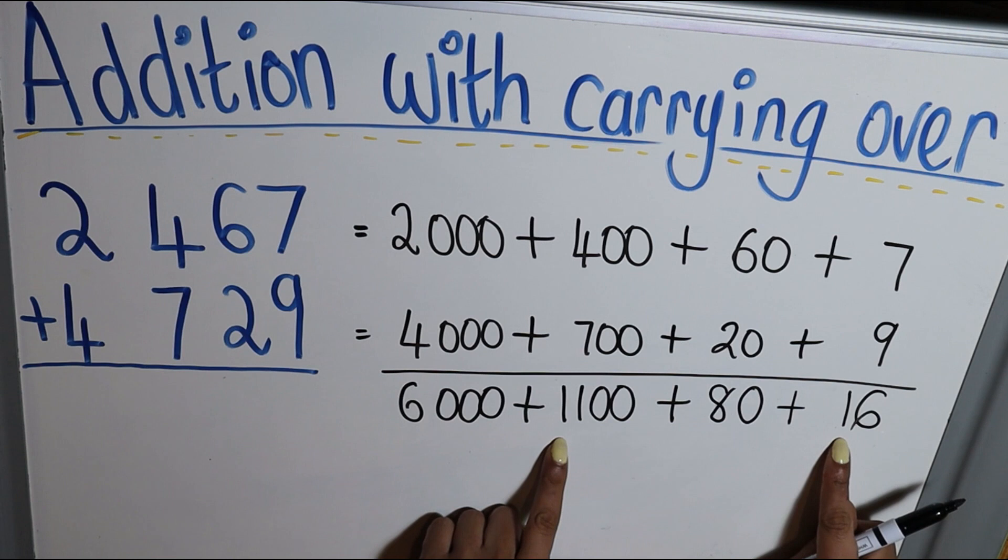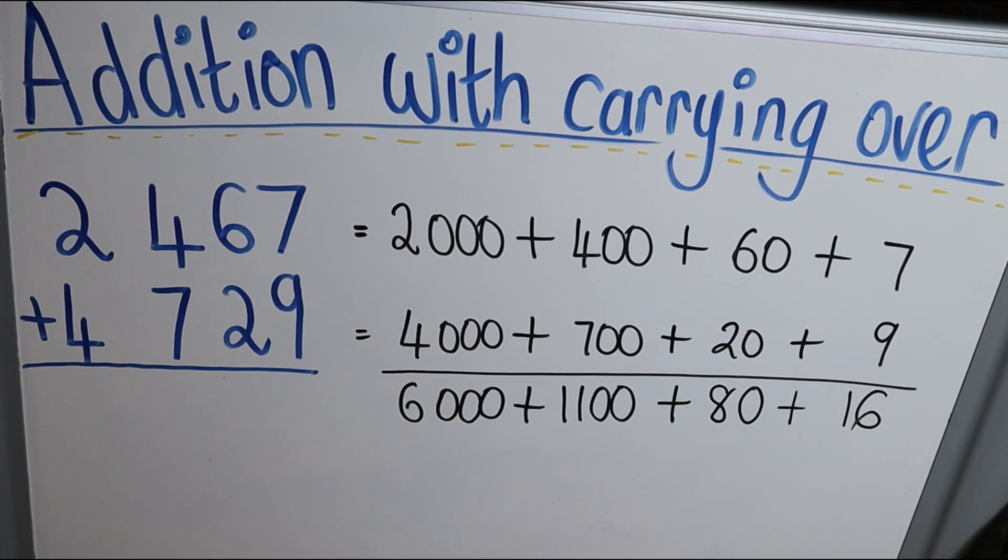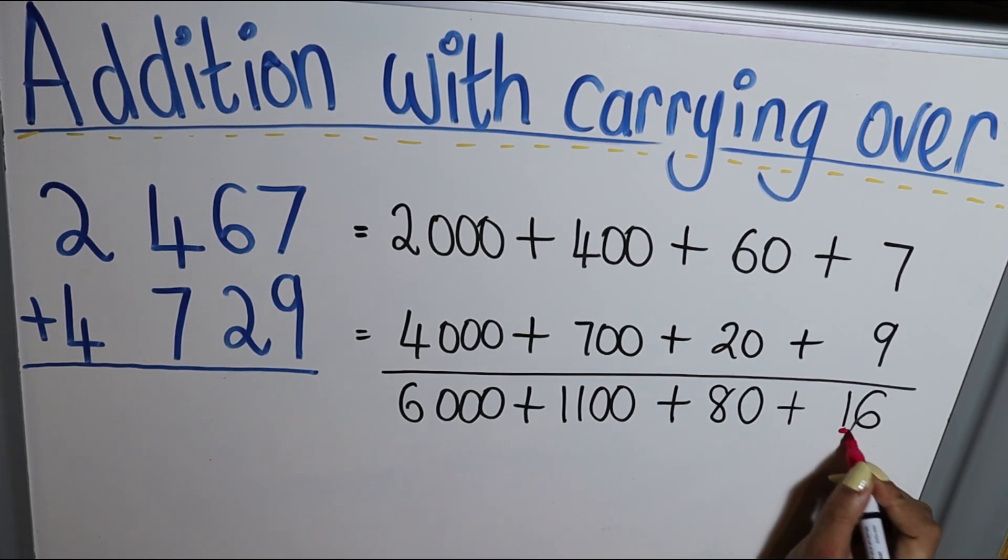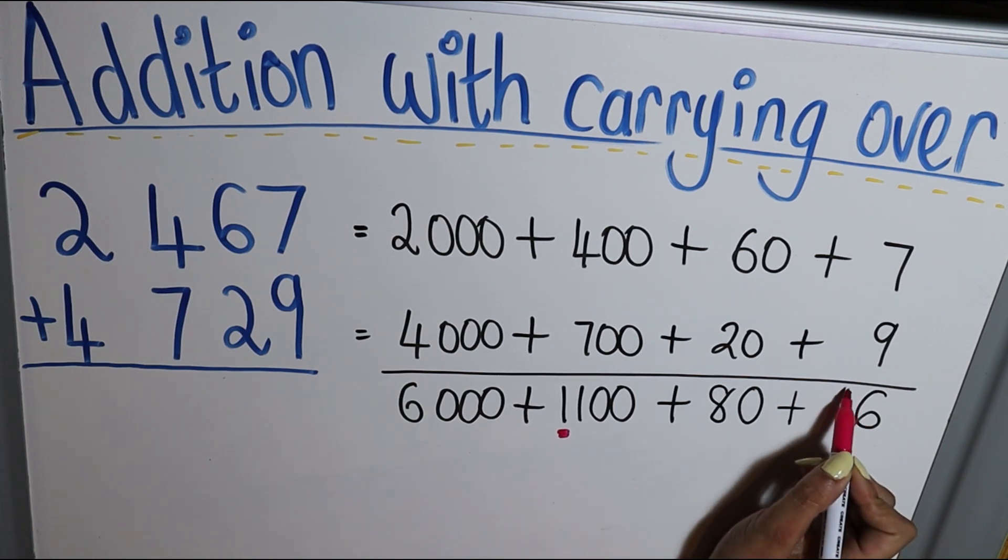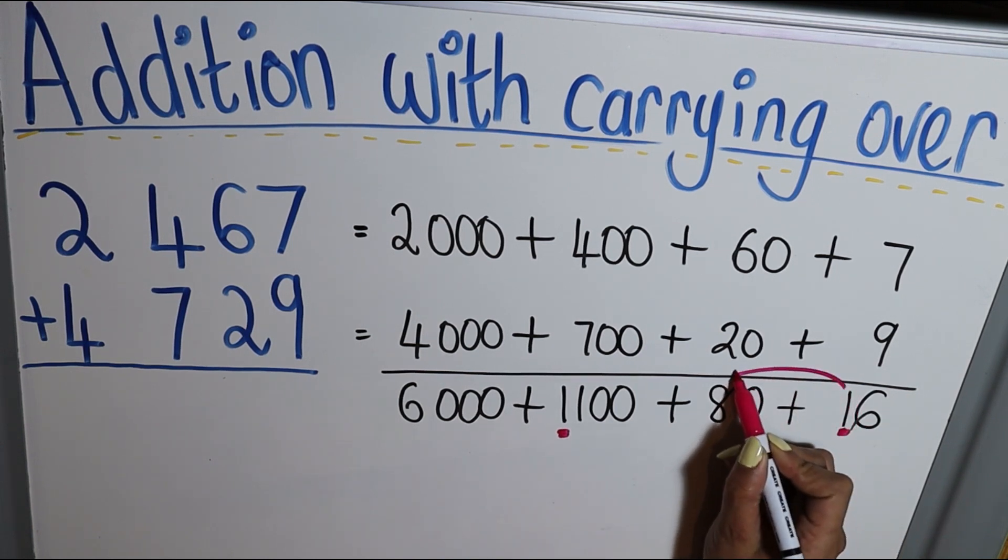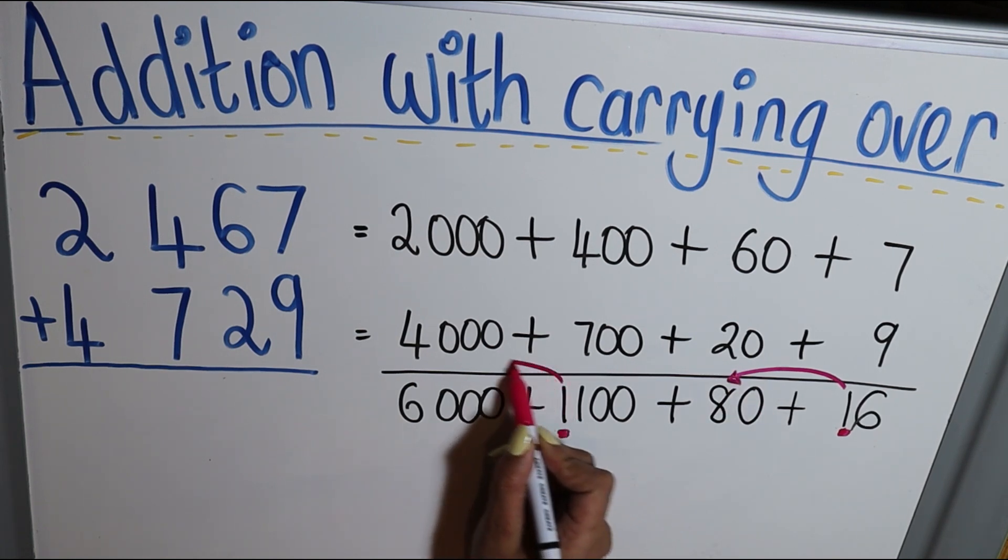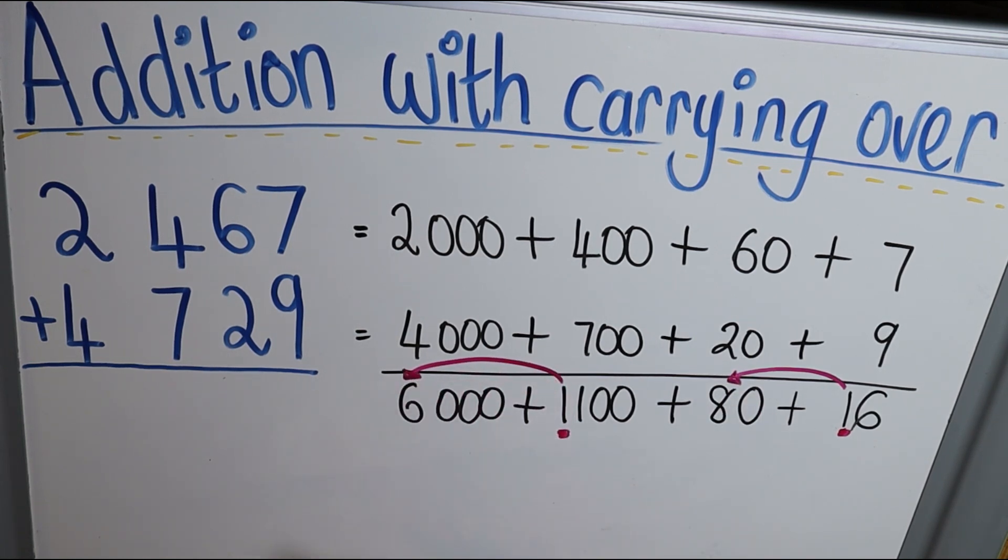Now you can see this 10 and this 1000 has to be carried over to the appropriate place values. So that 10 should be added over there, and that 1000 should go over there.